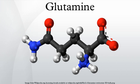Glutamine plays a role in a variety of biochemical functions. These include protein synthesis, as with any other of the 20 proteinogenic amino acids, regulation of acid-base balance in the kidney by producing ammonium, and cellular energy, as a source next to glucose.